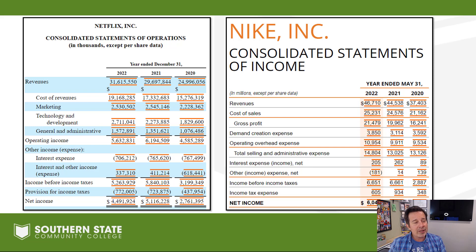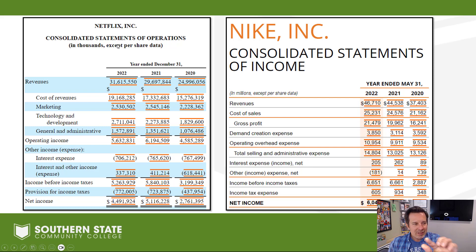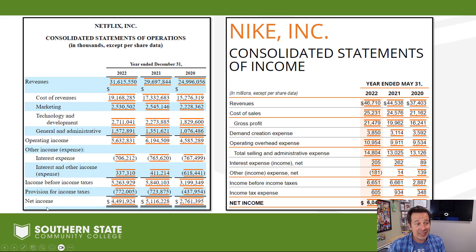The other thing I want to point out: you'll notice Netflix calls theirs a statement of operations, and Nike calls theirs a statement of income. It's the exact same thing — they're both income statements. You might see a little bit different labeling, but as long as you see revenues and expenses and net income, you know you're looking at the income statement.